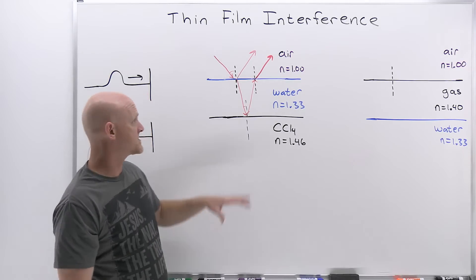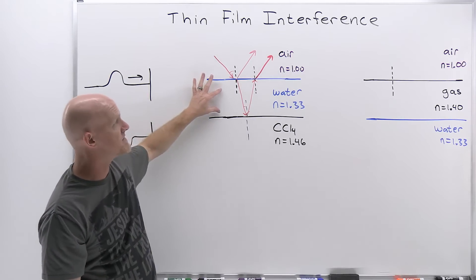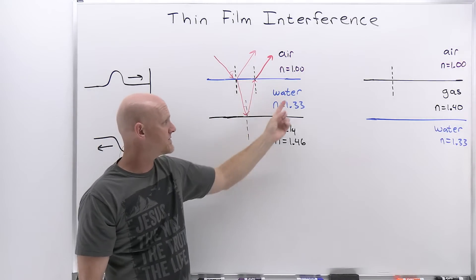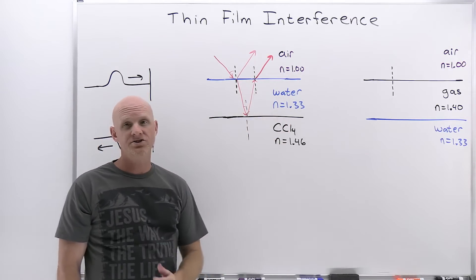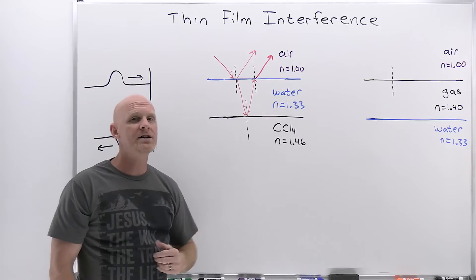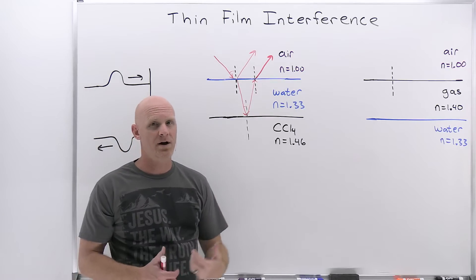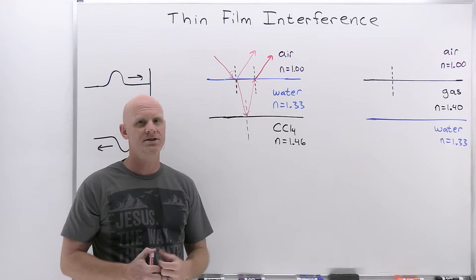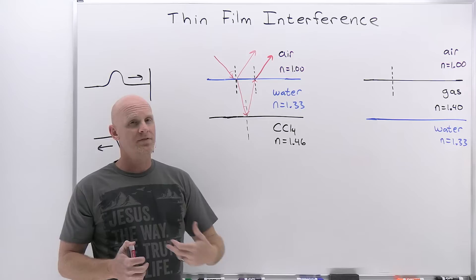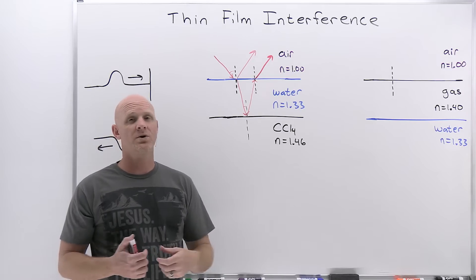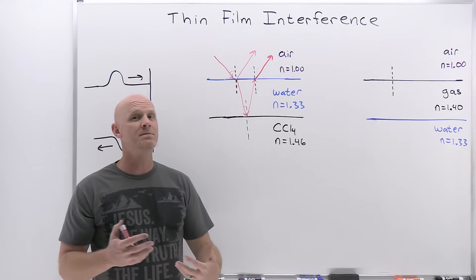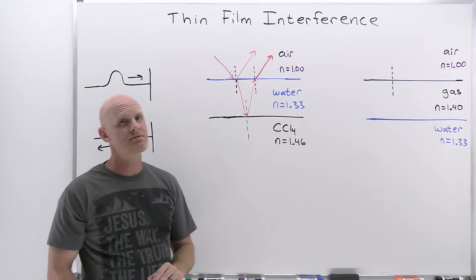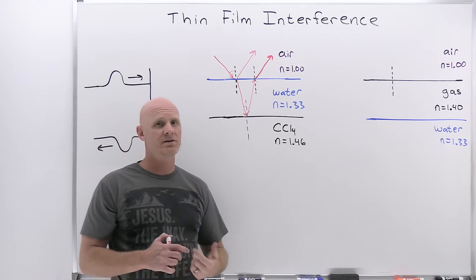A couple of things factor into whether we get constructive or destructive interference. The thickness of the film is relevant, as are the relative indices of refraction, and also what wavelength of light we're talking about. In white light we've got all the colors, and we'll find that some wavelengths undergo constructive interference and some destructive, just depending on the thickness of the film we're dealing with.